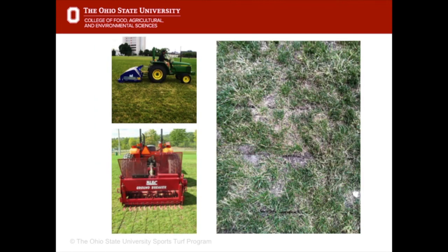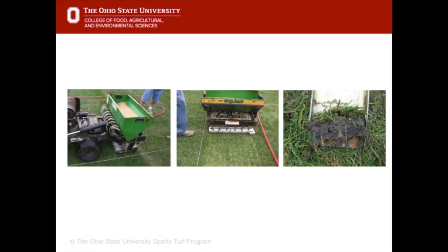Other types of tines can cut through the soil and also have a vibrating action, like the shock wave and ground breaker machines shown here. The dryject is a machine that injects high pressure water into the soil, causing a shattering of the soil profile. The cracks it creates are then filled with sand.